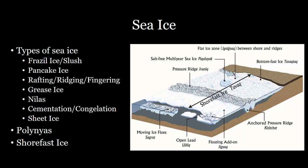Another aspect of sea ice is shorefast ice — ice that has frozen onto the shoreline. It lines the entire shoreline and does not move; it can last there for years. This is called Tuvek in North Slope Alaskan.